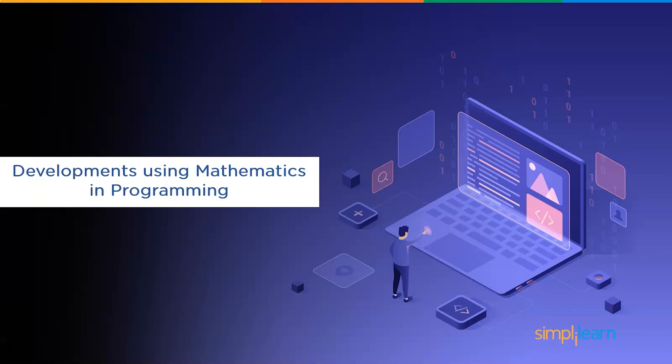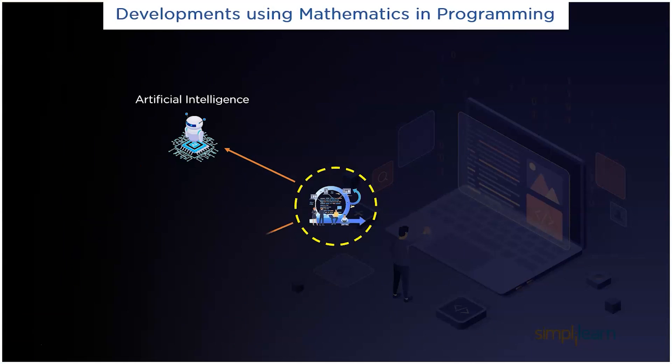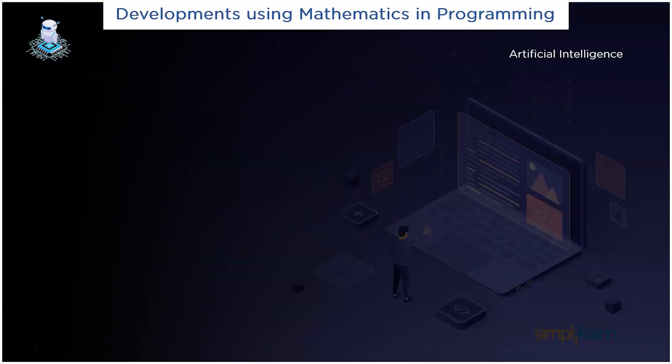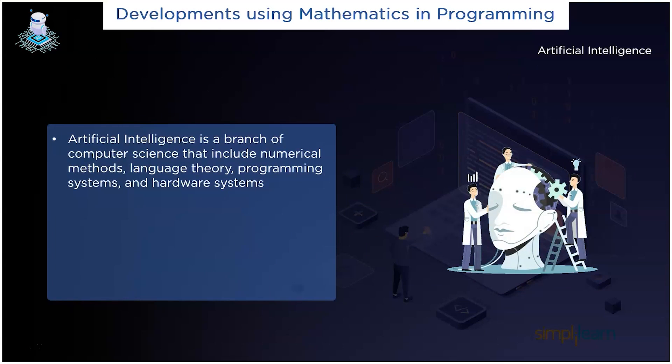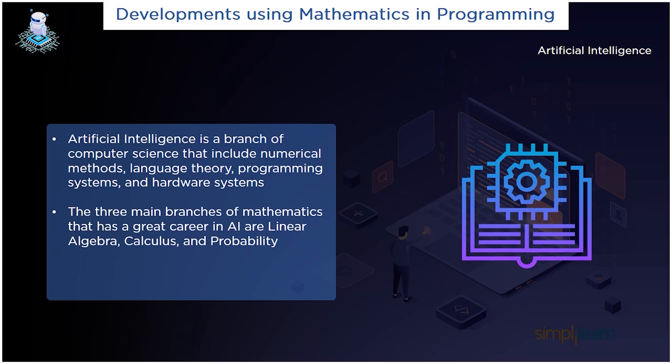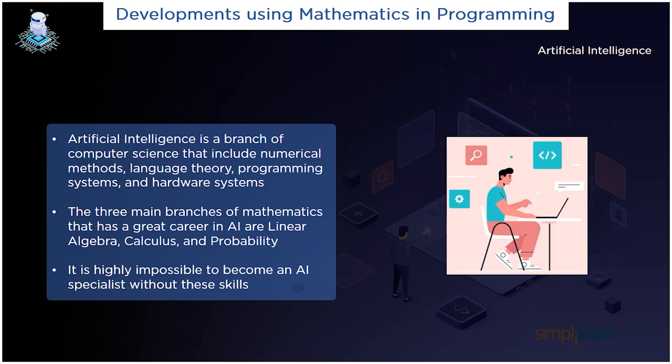Now let's understand some developments made using mathematics in programming. Mathematics is involved in some of the major developments like artificial intelligence, machine learning, game development, and simulation. Let's have a look at the first one that is artificial intelligence. Artificial intelligence is a branch of computer science that includes various numerical methods, language theory, programming systems, and hardware systems. The three main branches of mathematics that have a greater career in artificial intelligence are linear algebra, calculus, and probability. It is challenging to become an AI specialist without any experience in mathematics.